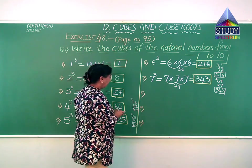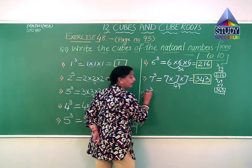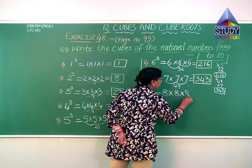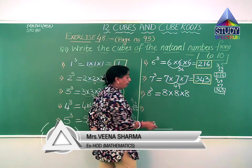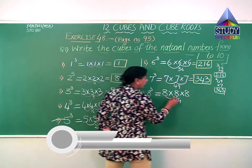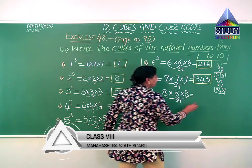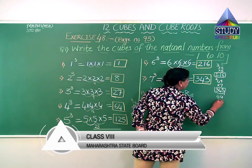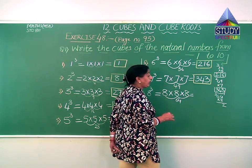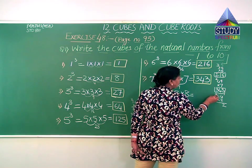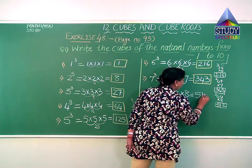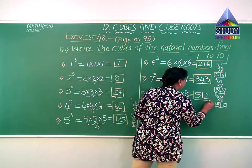Next, 8 cube, that is 8 raised to 3. Multiply 8 into 8 into 8. 8 into 8 is 64 — that is the square. Now multiply 64 by 8: working — 8 fours are 32, carry 3; 8 sixes are 48, 48 plus 3 is 51. So the answer is 512. The cube of 8 is 512.